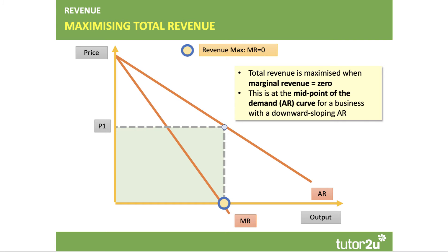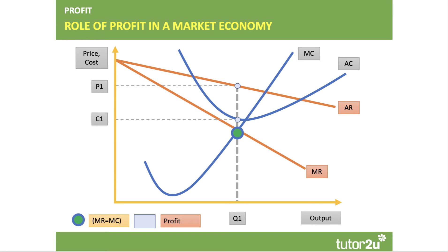On the revenue side, it's important to draw your marginal and average revenue curves starting together from the y-axis. The gradient of MR is twice the gradient of average revenue — that's for a downward sloping demand curve. Bringing cost and revenue together — this is where most of the analysis marks are. A profit-maximising firm produces at Q1 where marginal revenue meets marginal cost. You draw up to the demand curve to find the price, use the average cost curve to find unit cost, and in this case the firm is making supernormal profit. Normal profit is included in the average cost curve as the opportunity cost of capital.